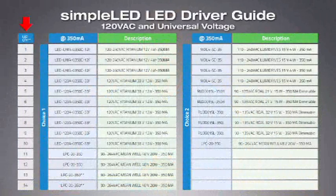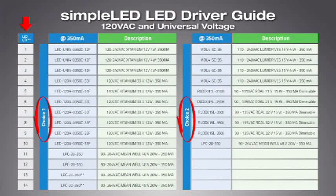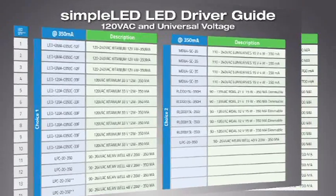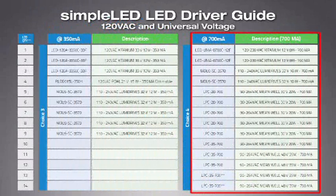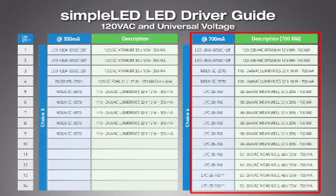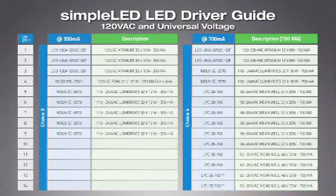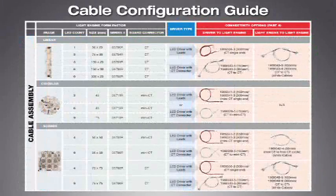By determining how many LEDs are in your system, you can follow the appropriate row and select from three to four options. The last column designates power at 700mA if you really want to drive it harder. Also, cables are critical to connecting multiple light engines together or connecting your light engine to the LED driver. We've created a cable configuration guide in order to make your selection process as simple as possible.